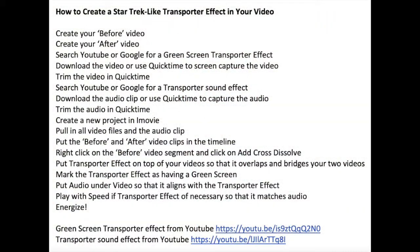Create your before video, create your after video. Search YouTube or Google for a green screen transporter effect, download the video or use QuickTime to screen capture it. Trim the video in QuickTime. Search YouTube or Google for a transporter sound effect, download the audio clip or use QuickTime to capture the audio. Trim the audio in QuickTime. Create a new project in iMovie and pull in all video files and the audio clip. Put the before and after video clips in the timeline.